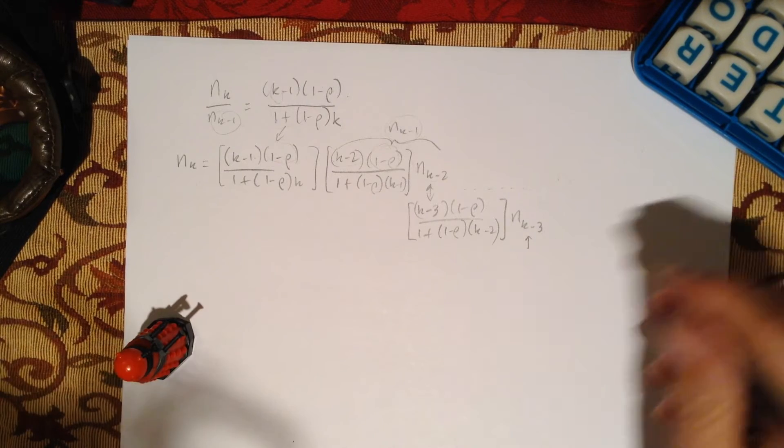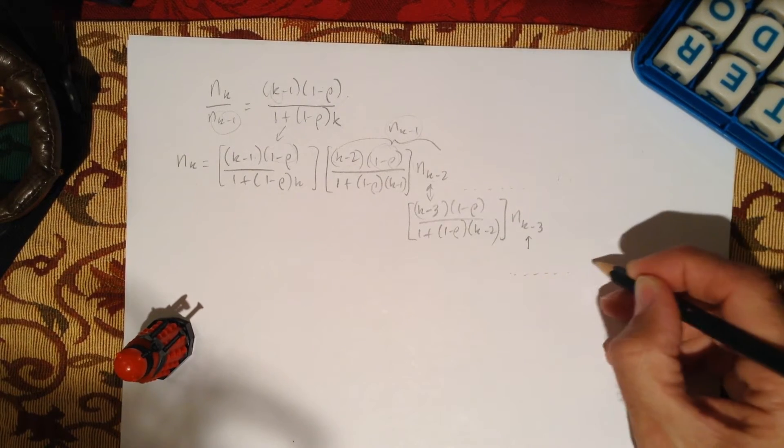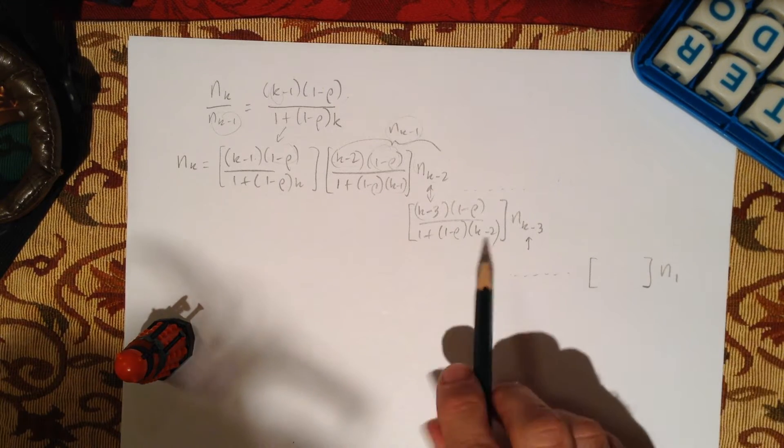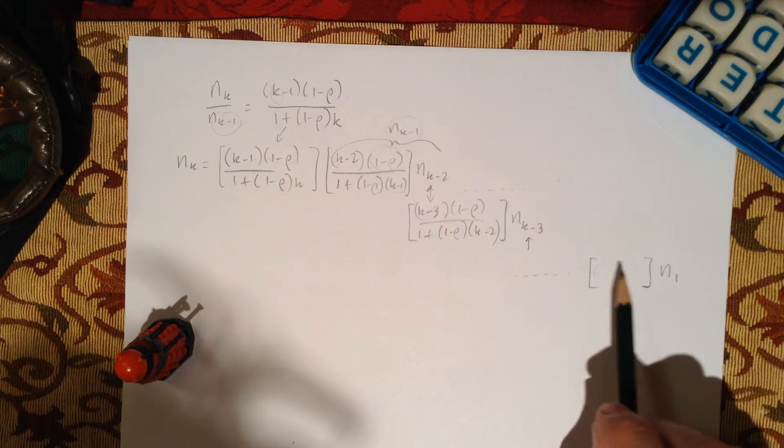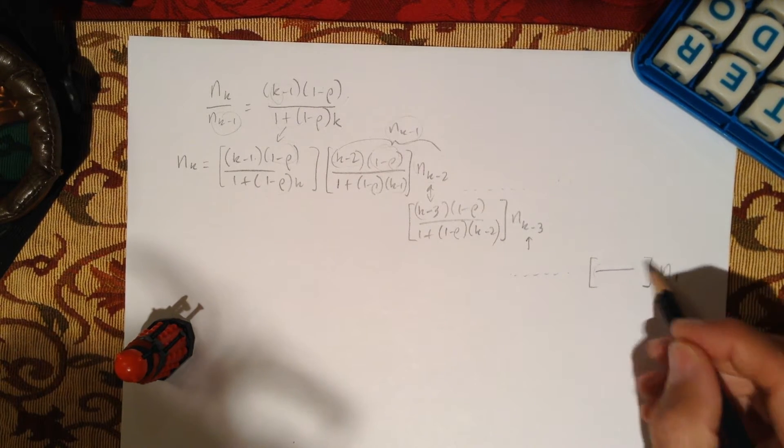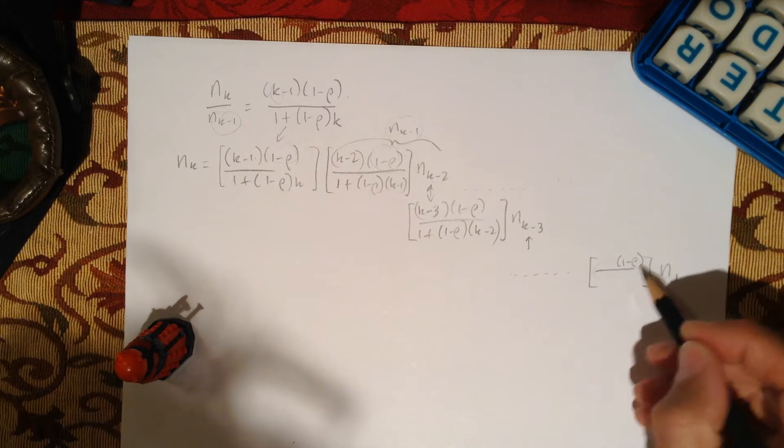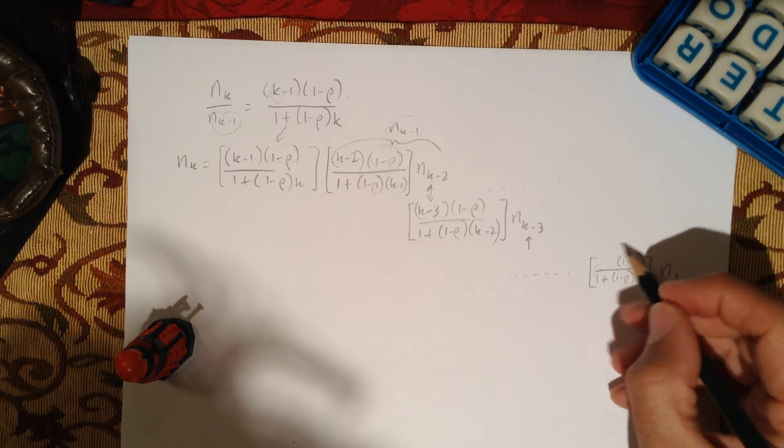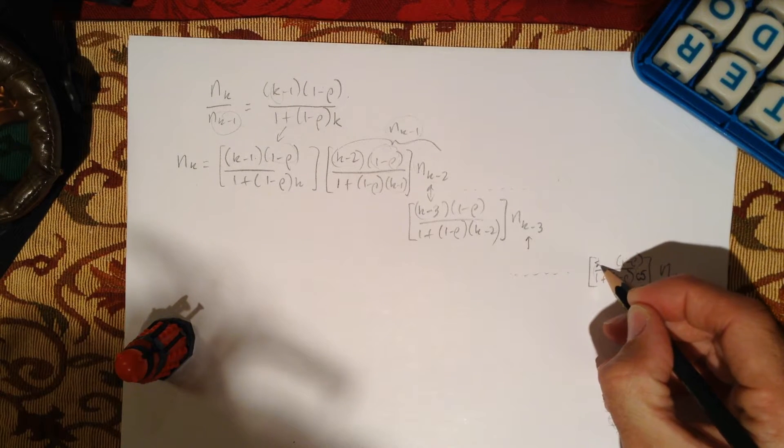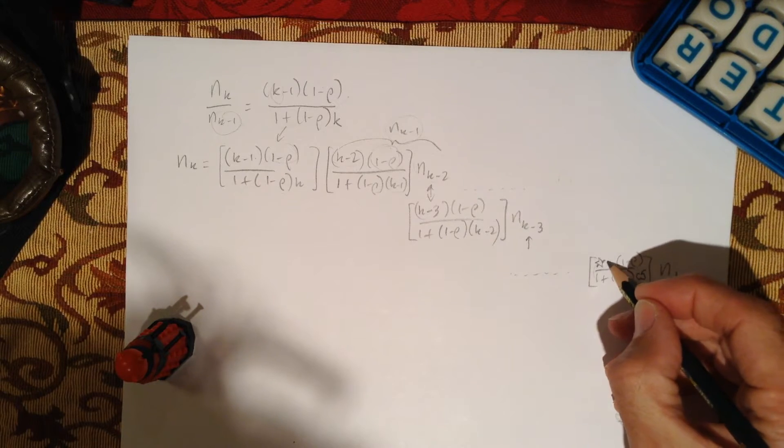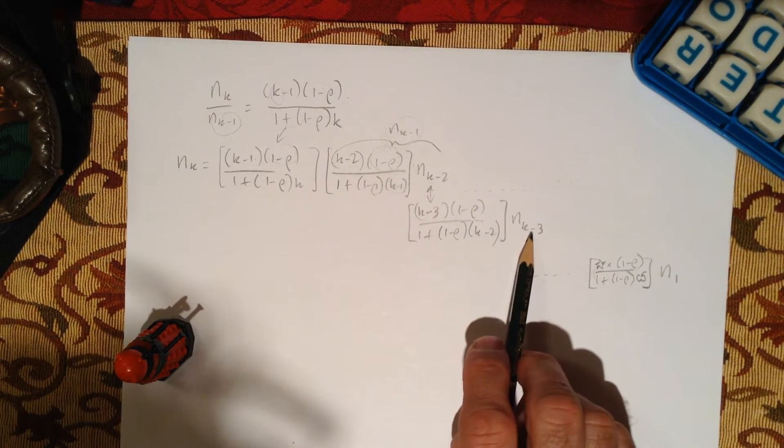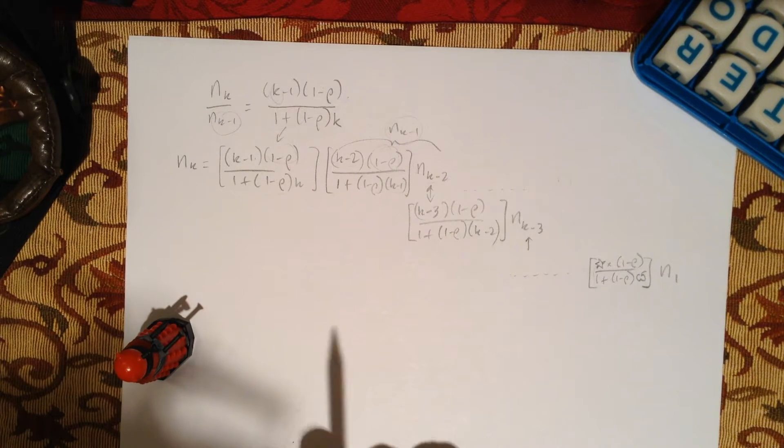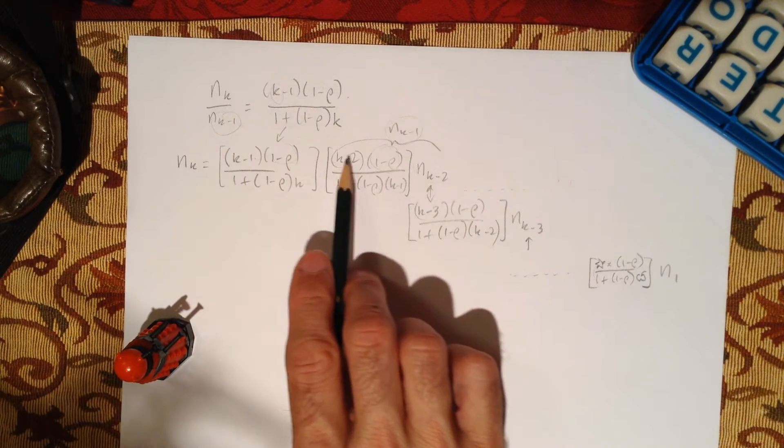Eventually we're going to have all these terms going down to something times n1. This can be tricky to think about, but it's actually quite nice. We know it's going to have this form: 1 minus rho, and there'll be a 1 plus 1 minus rho times something. I'll put an apple here and a little star here, times this. You have to think about what that would be. A nice way to see this is look at k minus 3 here, k minus 2, k minus 3. You might see the pattern.